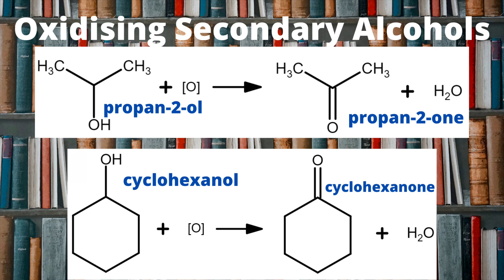Moving on to the secondary alcohols — when I oxidize a secondary alcohol using acidified potassium dichromate, what I end up with is a ketone. A ketone is my organic product from the oxidation of a secondary alcohol. I can't get a carboxylic acid and I can't get an aldehyde — I can only get ketones from secondary alcohols. Similarly, I can't get a ketone from a primary alcohol. The O in square brackets is used again in these reaction equations and we again produce a molecule of water, which is a common feature of alcohol reactions in this topic.